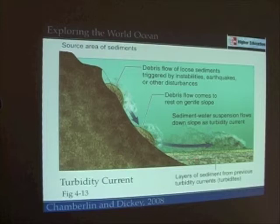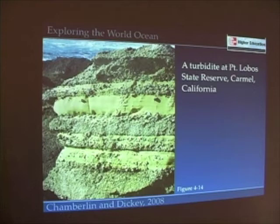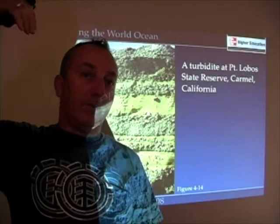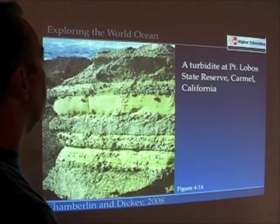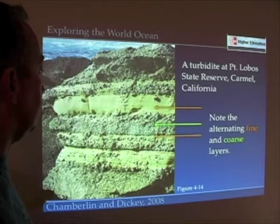After several episodes of this, we get alternating layers of large particles then fine particles, repeated multiple times — what are called turbidity deposits, or turbidites. Here's an example from Point Lobos State Reserve, one of my favorite places to visit. You can clearly see the alternating large and fine particle layers. This is a deposit from an underwater landslide called a turbidity current, and that turbidity current is what carves out the submarine canyons we find cross-cutting many continental margins.